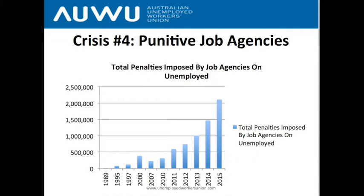This graph shows how punitive the system has become in a very short time. In the late 1980s the job agency system was state-run — called the Commonwealth Employment Service. Under that system there were very few penalties. In 1989 it's barely visible — around 10,000 penalties. As the Labor government of the time increased requirements placed on people receiving the dole, penalties increased slightly through 1995.